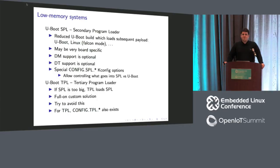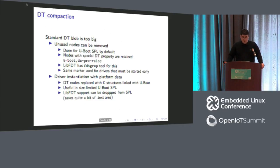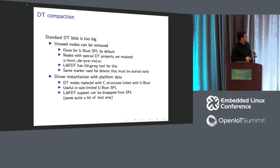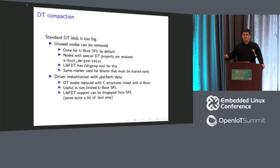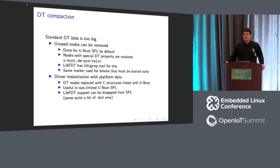To reduce U-Boot SPL size: if you use device tree control in SPL, all device tree nodes without a 'u-boot,dm-pre-reloc' entry are stripped, reducing the device tree blob size considerably. Alternatively, you can completely remove device tree control and probe all drivers from your board file using platform data. The libfdt itself is quite large, so removing it can help reduce size further.